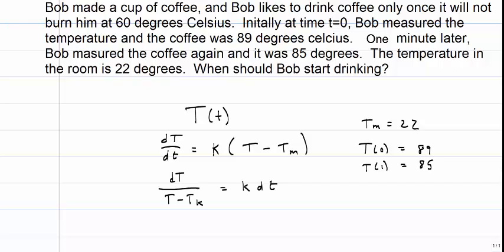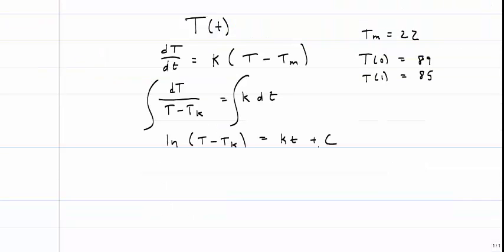We're going to separate our variables. It's a little confusing because I have big T and little t, but little t is time and capital T is temperature. And I'm going to now integrate both sides. I've dropped the absolute value bars from my natural log because I know T minus Tk is a positive number. And then I'm going to exponentiate both sides, that is, do e to both sides. And again, I've changed e to the C to yet another C. And finally, I'll solve for T.